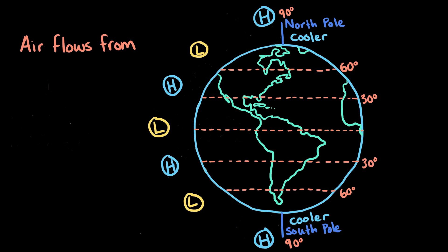We know that air flows from areas of high pressure to areas of low pressure. This creates air currents, or winds. Now, you might think that these winds would blow in straight lines from high to low pressure areas.